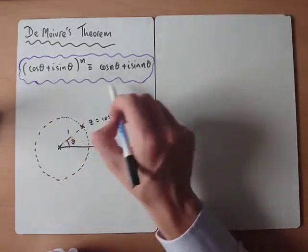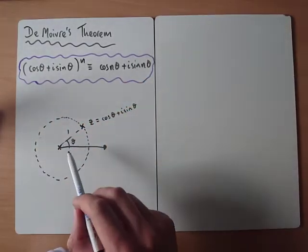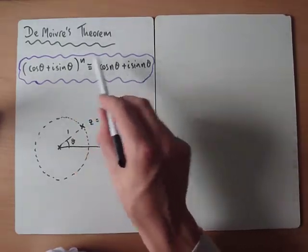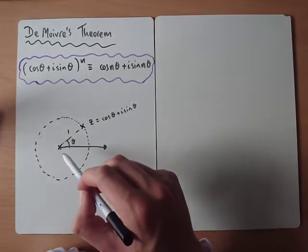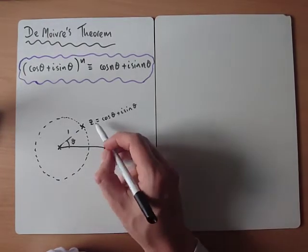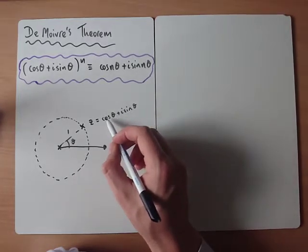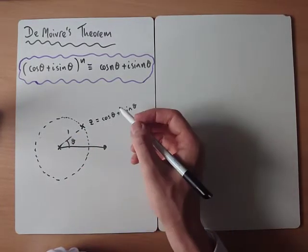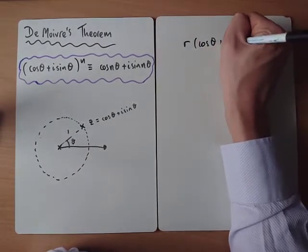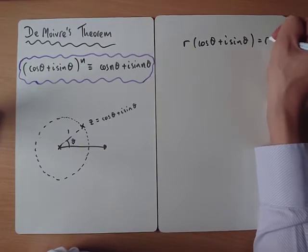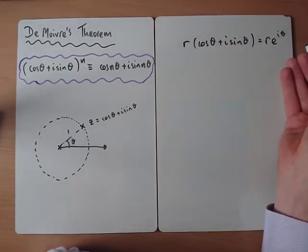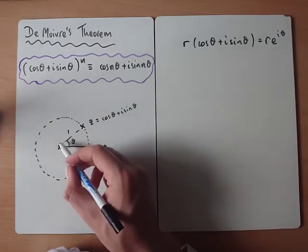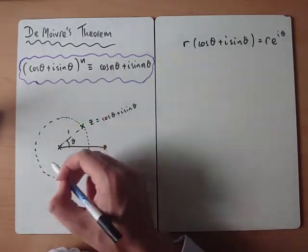Before we jump in and start solving equations, let's take a brief step back and try to visualise what this tells us, because understanding the geometry of complex numbers is an important part of our course. If z = cos θ + i sin θ, the magnitude is 1, because if we write it as r(cos θ + i sin θ), and r equals 1, our complex number sits on a circle with a radius of 1.